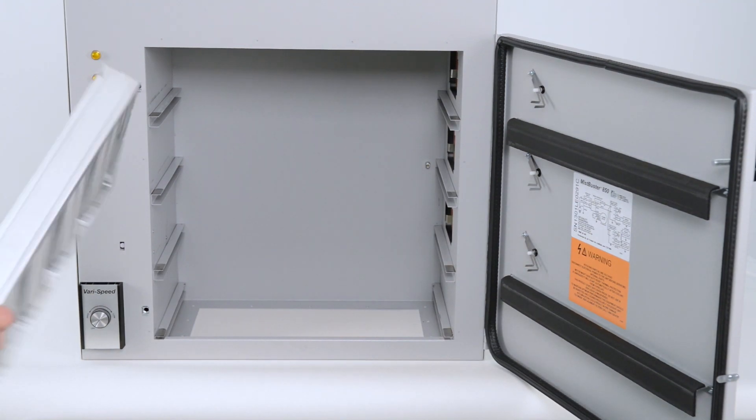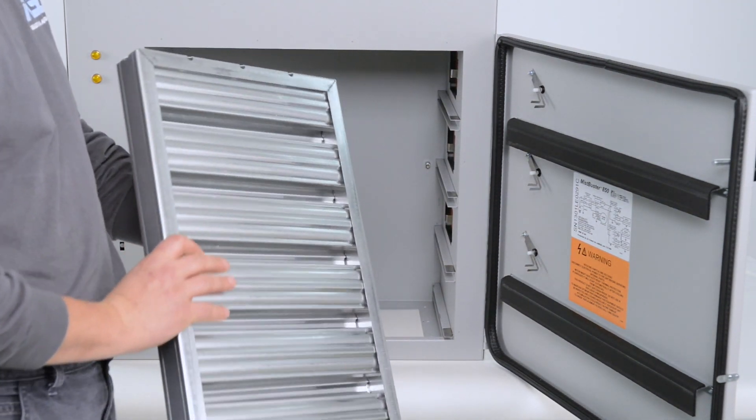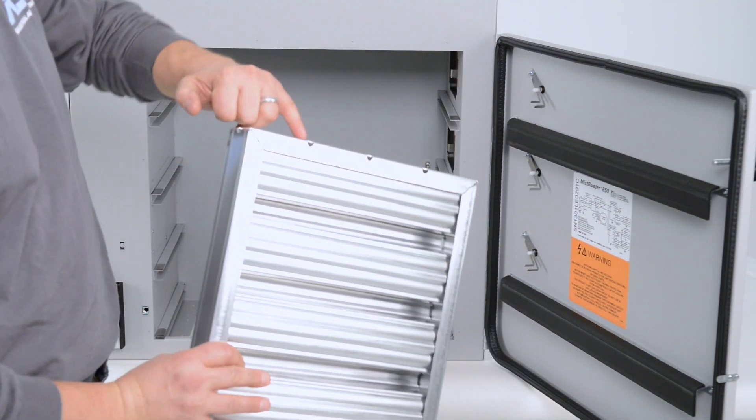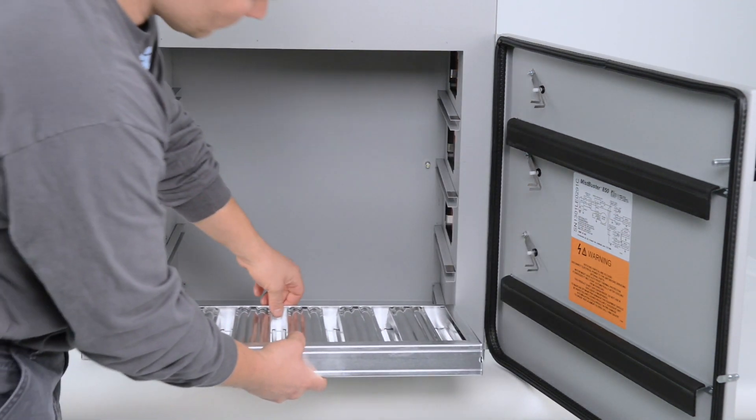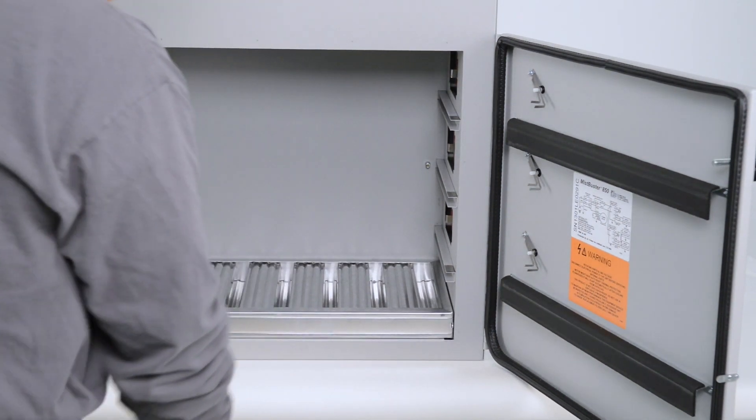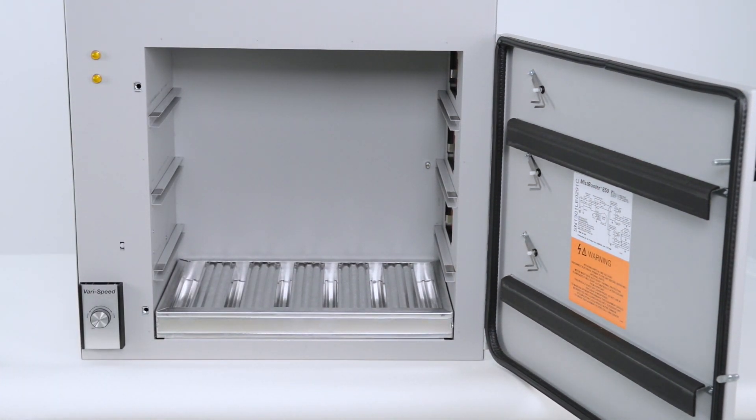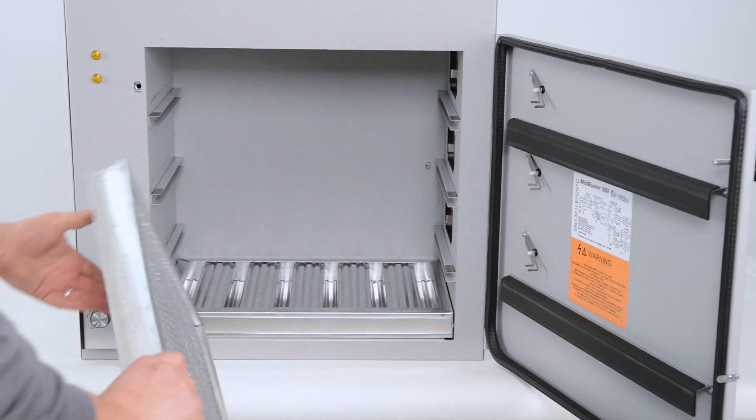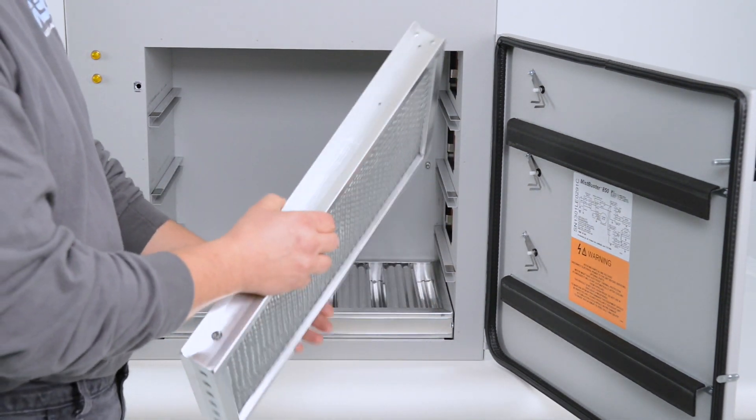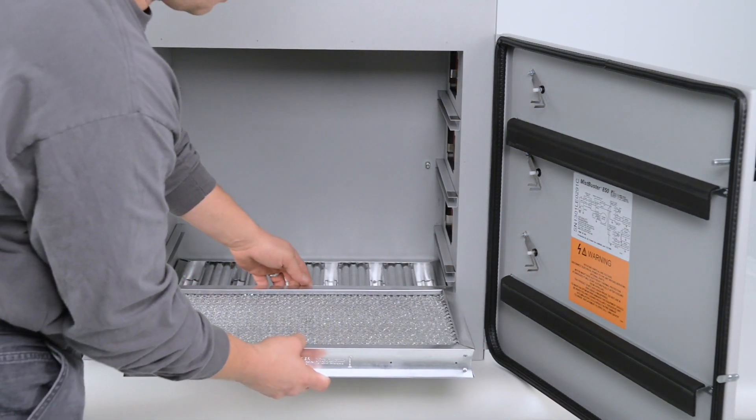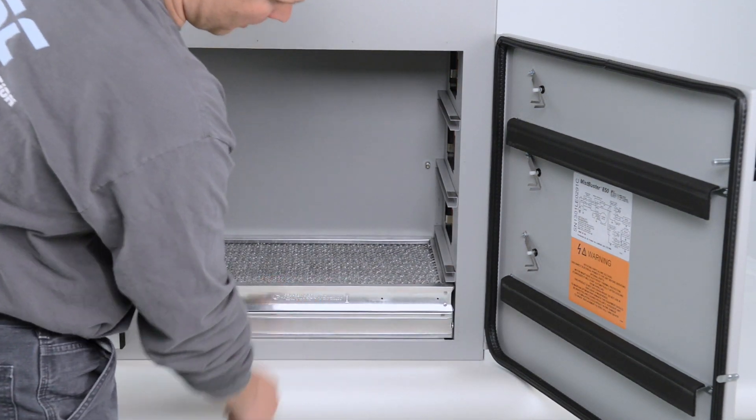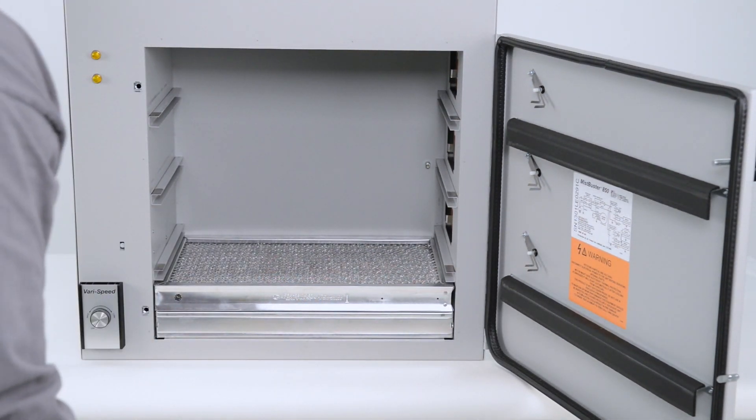When reinserting the new cells, you need to put the grease trap impinger section first with the drains pointing down. The second stage filter has an arrow pointing up, and you want to place that directly above the first impinger.